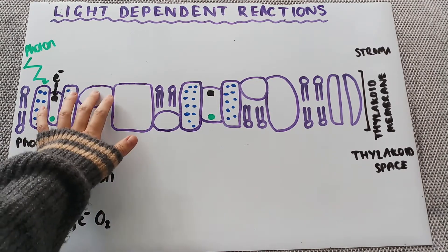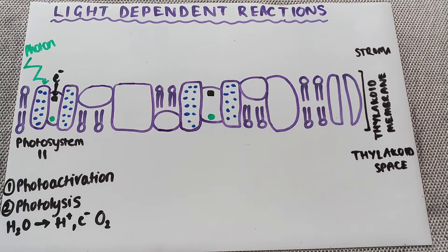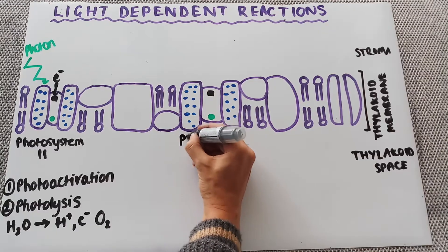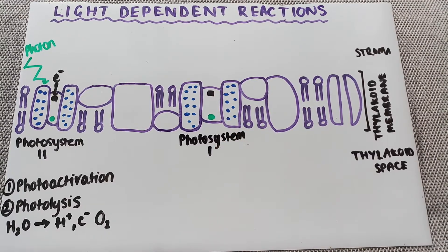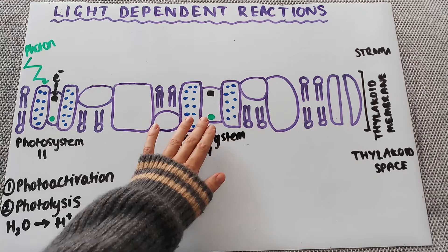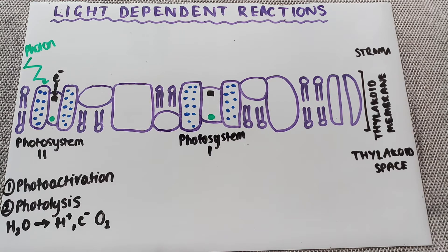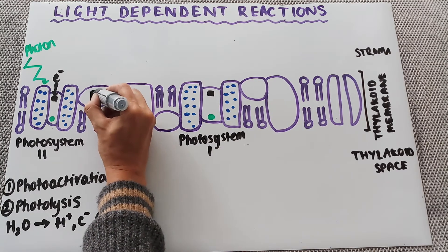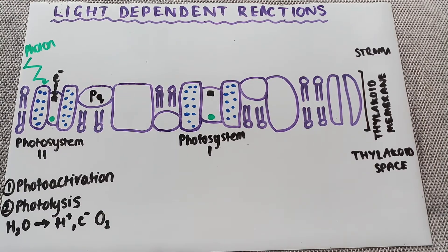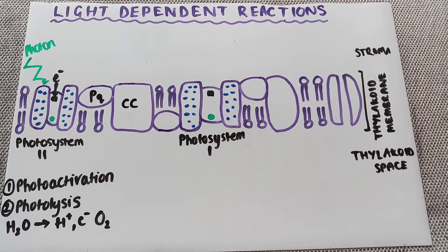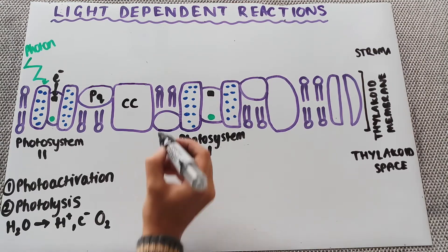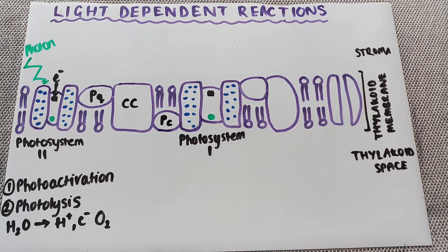Following that, we have the first electron transport chain, which moves the electron down to photosystem 1. Within this electron transport chain there are three key proteins you need to know. The first is plastoquinone — labelled PQ. In the middle is the cytochrome complex — labelled CC. The last one is plastocyanin — labelled PC — and this is an electron acceptor.